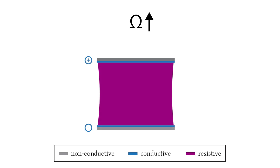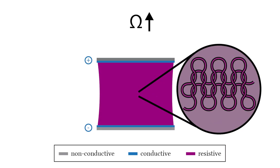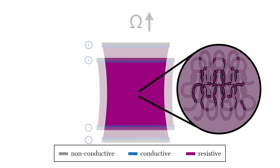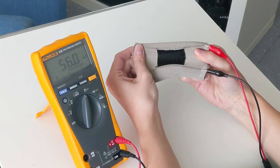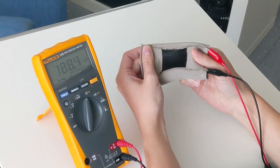At rest, the individual loops of the resistive area are in loose contact. Applying strain forces leads to tighter contact of interlocked loops, resulting in a resistance drop.